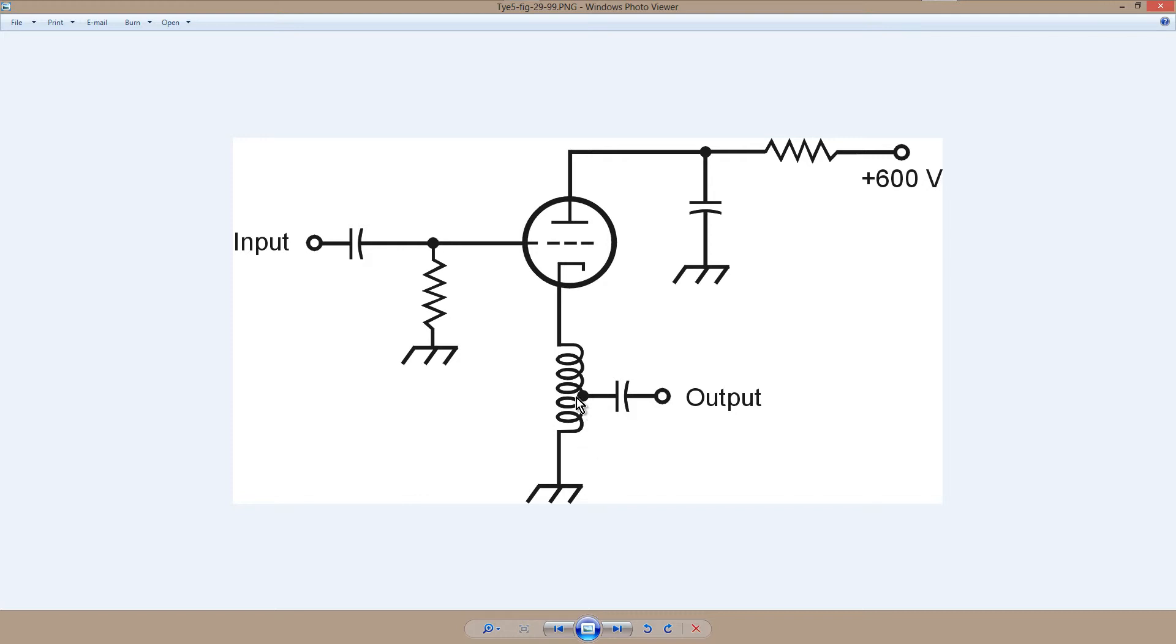It works just about the same way as a source follower field effect transistor circuit does. We take the output from the cathode by tapping a coil, then this resistor here limits the current through the device, and you can identify the grounded plate circuit because the plate is at signal ground through this bypass capacitor. So that is how those three circuits are configured.